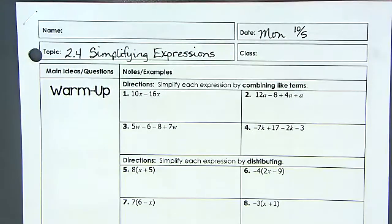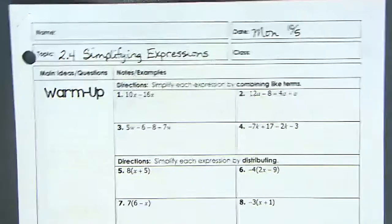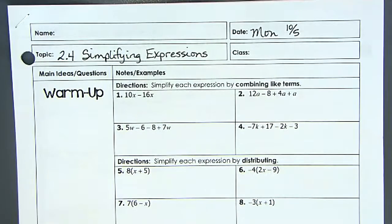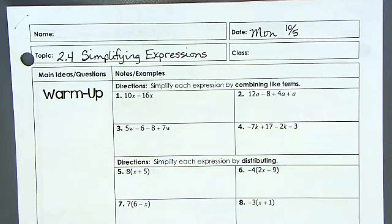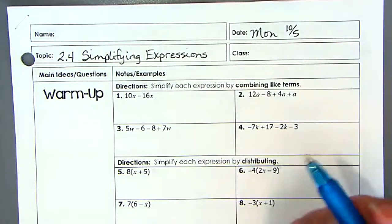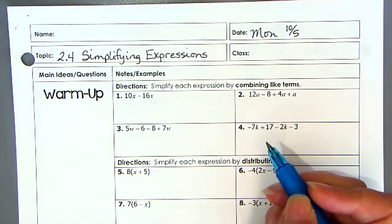Today we're going to talk about simplifying expressions. This is 2-4 simplifying expressions, which is combining 2-2 and 2-3 together. All right, so let's work some examples.